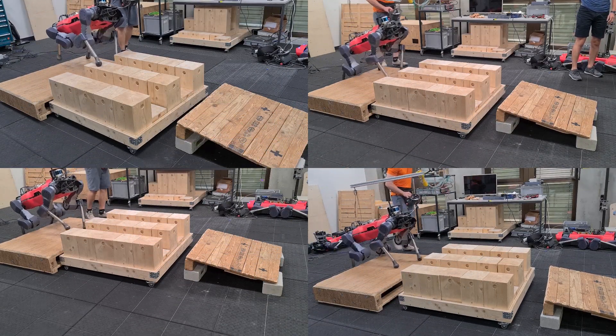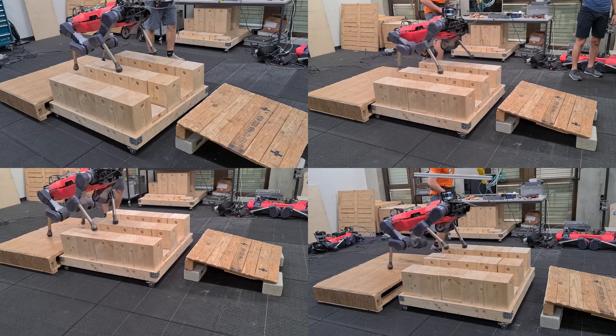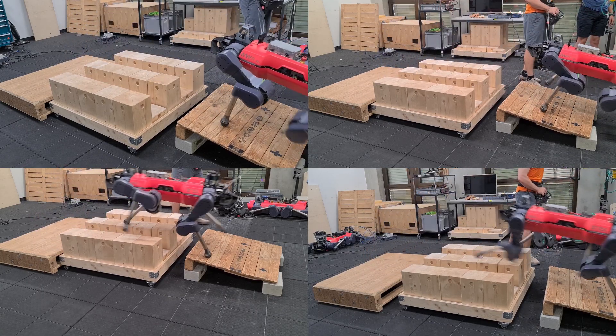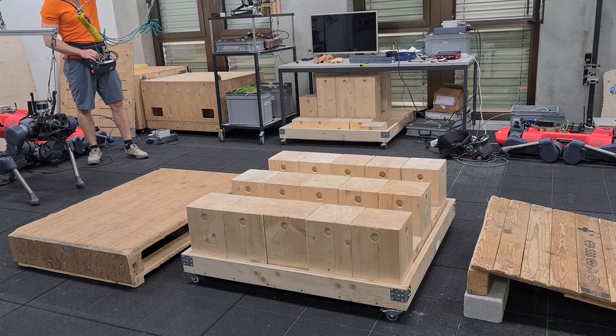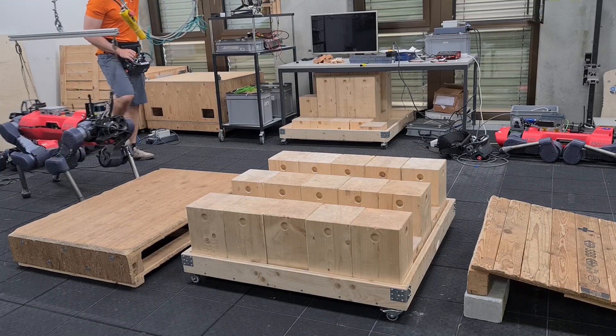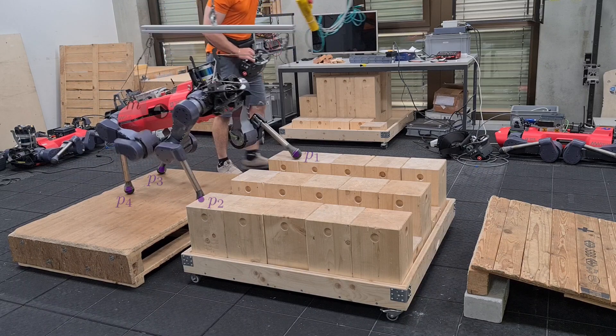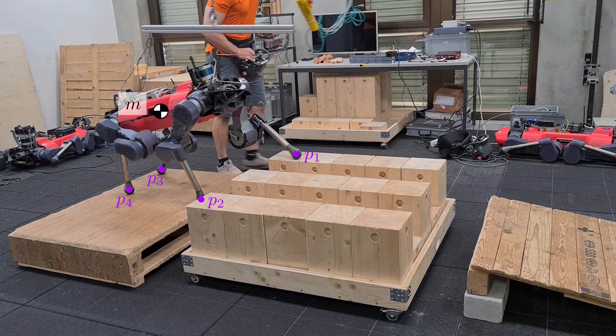We present a terrain-aware locomotion framework which jointly optimizes over the base pose and footholds. The robot is modeled as single rigid body dynamics that interacts with the environment through point contacts.